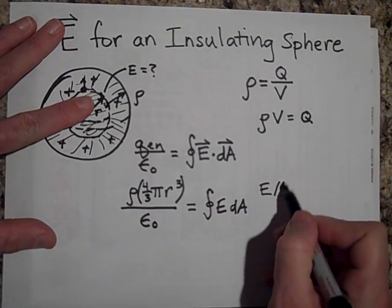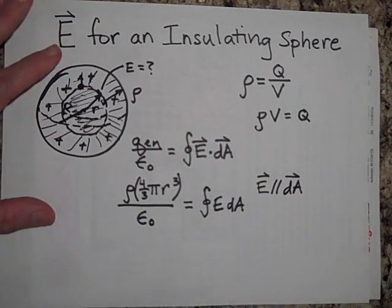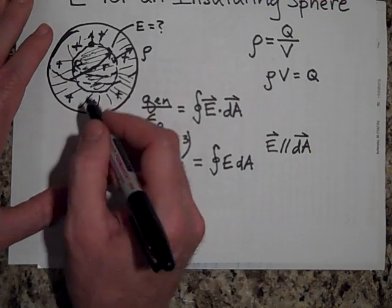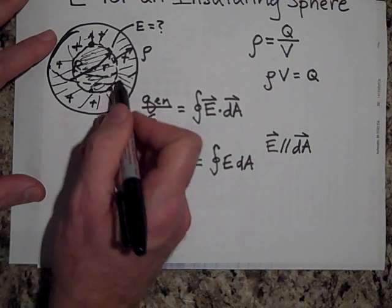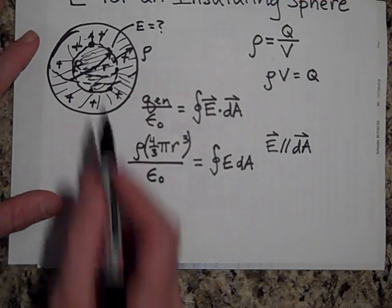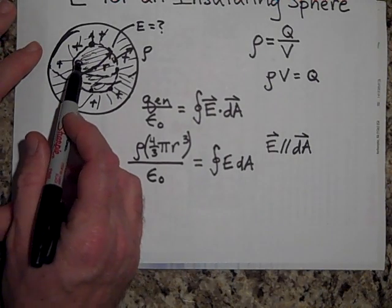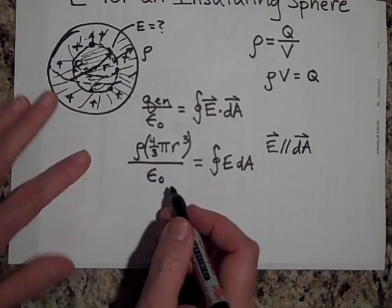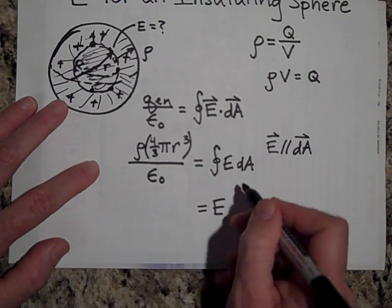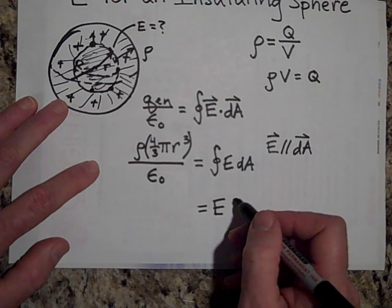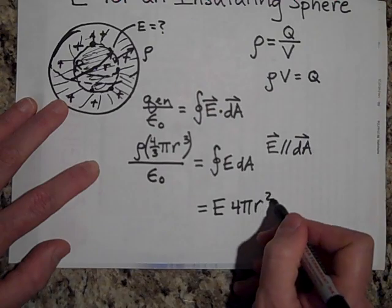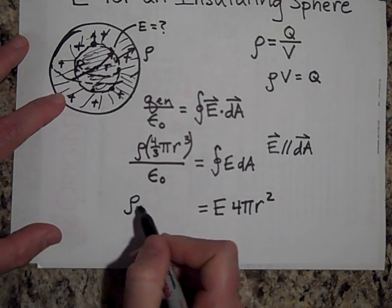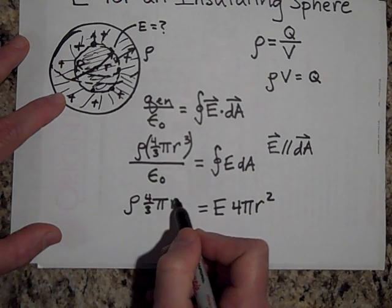Because E is parallel to dA at all points on the Gaussian surface, we can remove the dot product. And by symmetry, E is the same magnitude everywhere on the Gaussian surface — there's no reason it would be bigger at one spot than another. So we pull E outside the integral, and summing all the dA's gives four pi little r squared. Setting that equal to the right-hand side: E times four pi r squared equals rho times four-thirds pi r cubed over epsilon-naught.